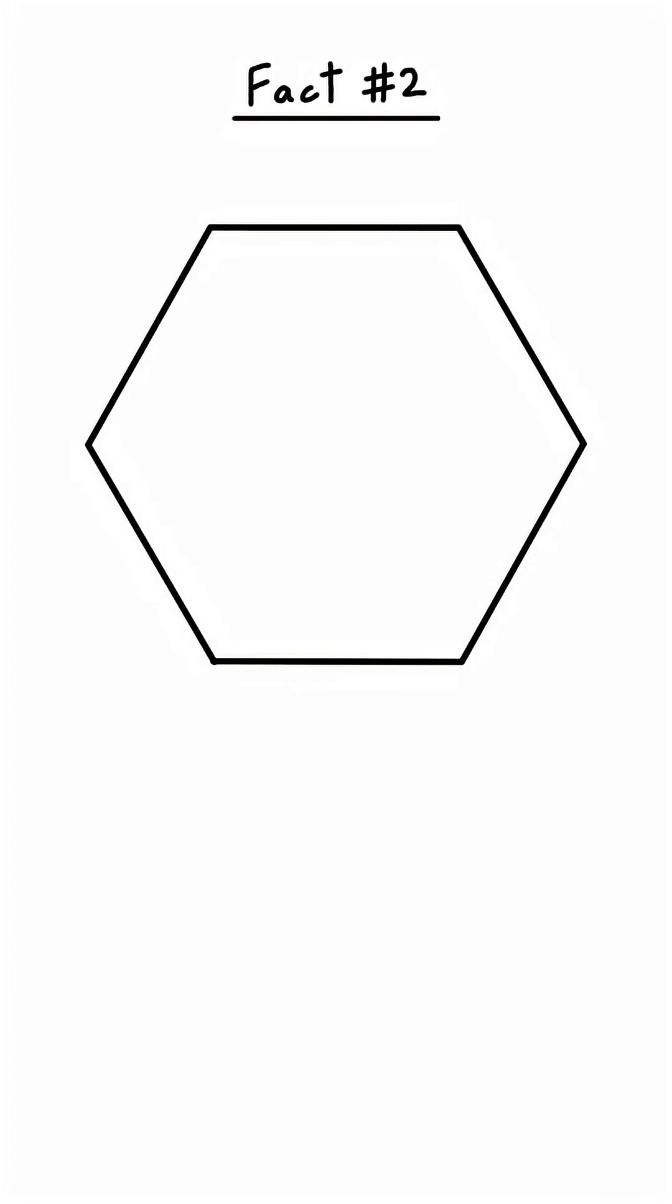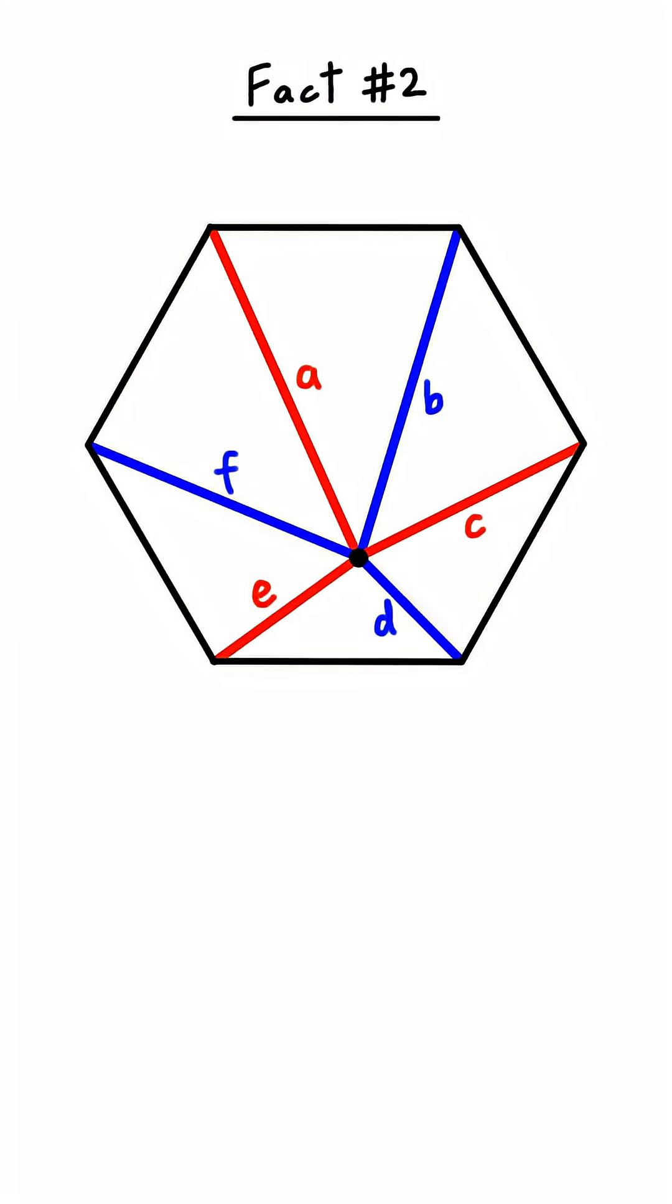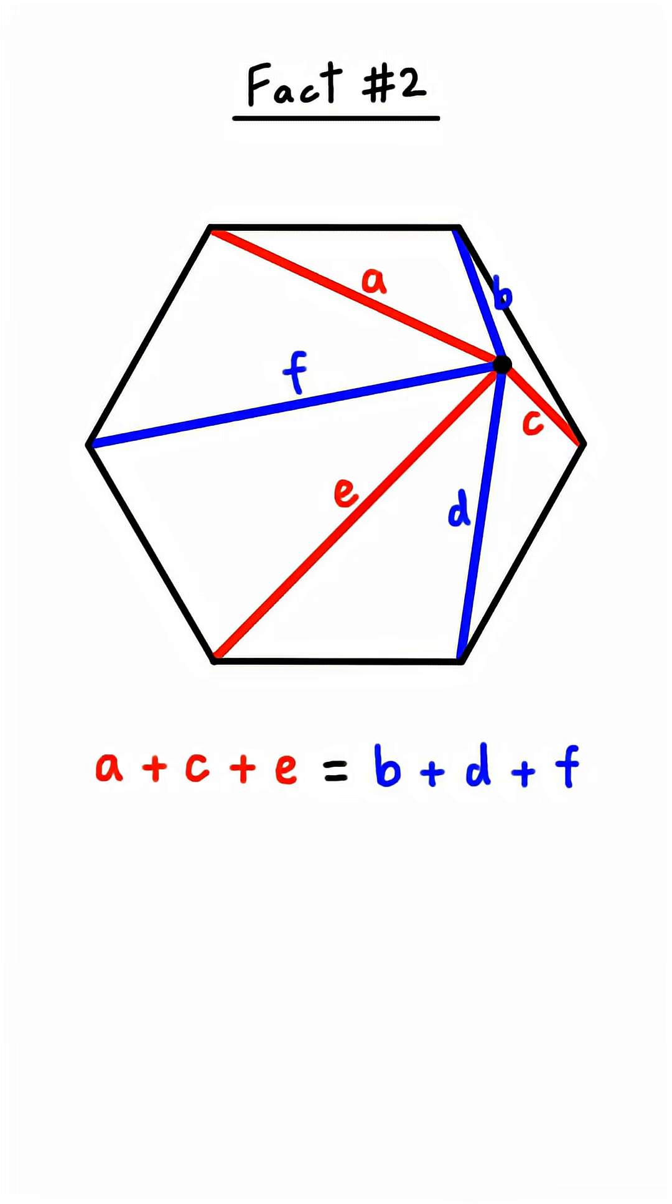Second fact: draw a regular hexagon along with a point inside. If you color these six lines red, blue, red, blue, red, blue, the sum of the red lengths always equals the sum of the blue lengths, no matter where your point is.